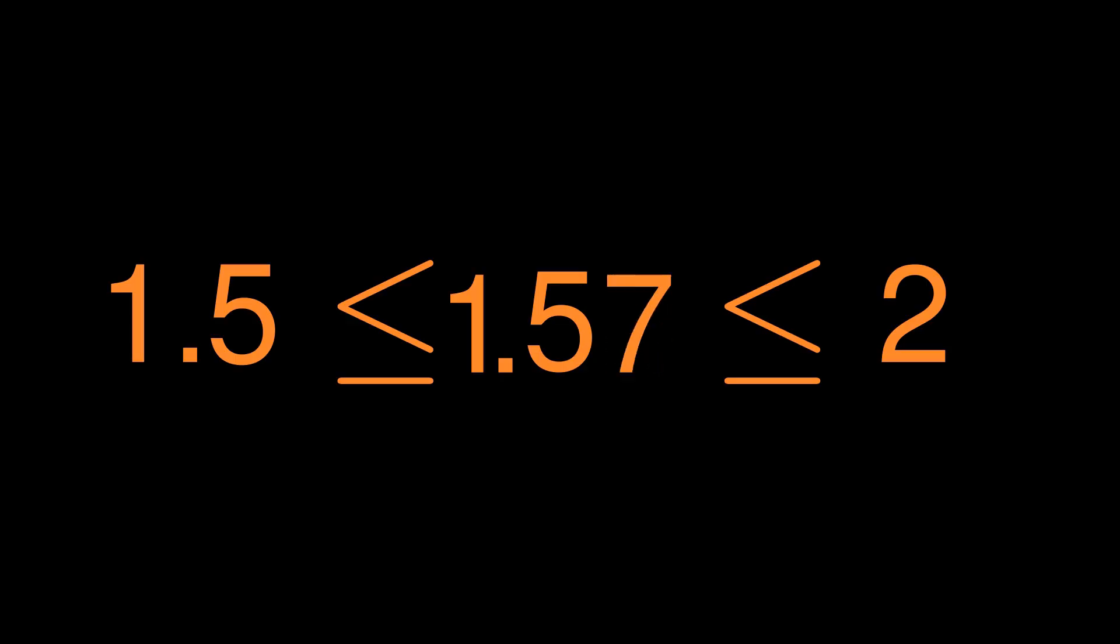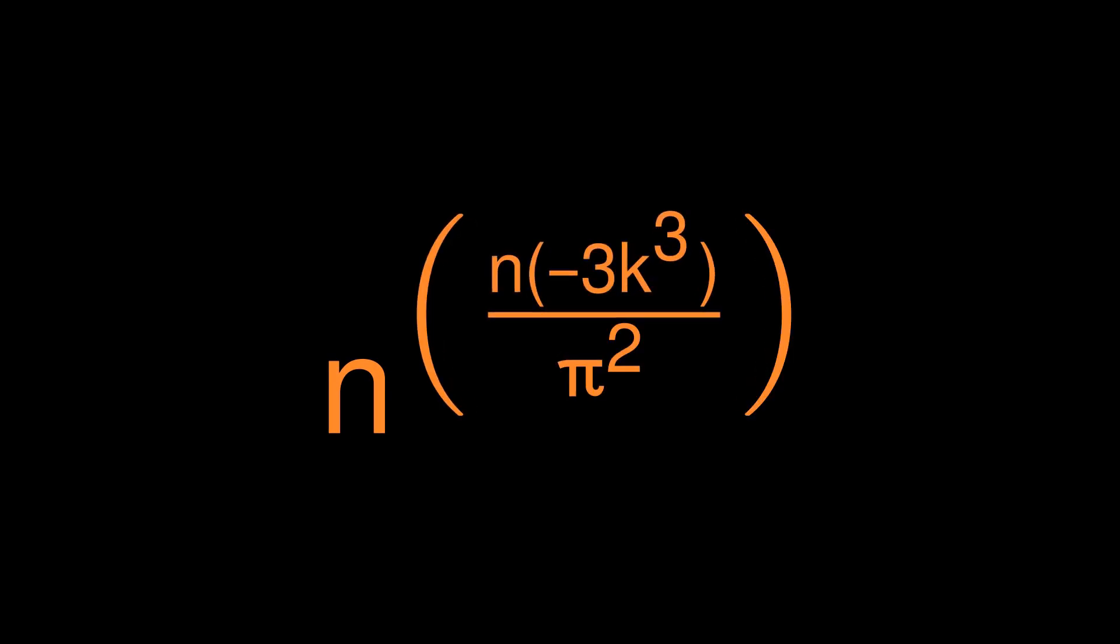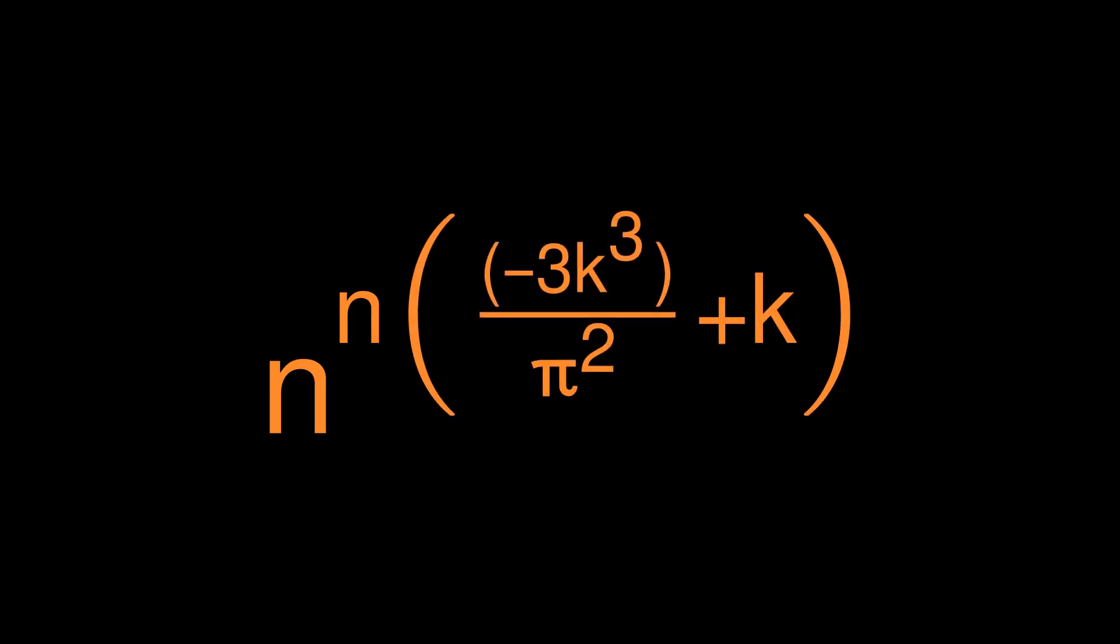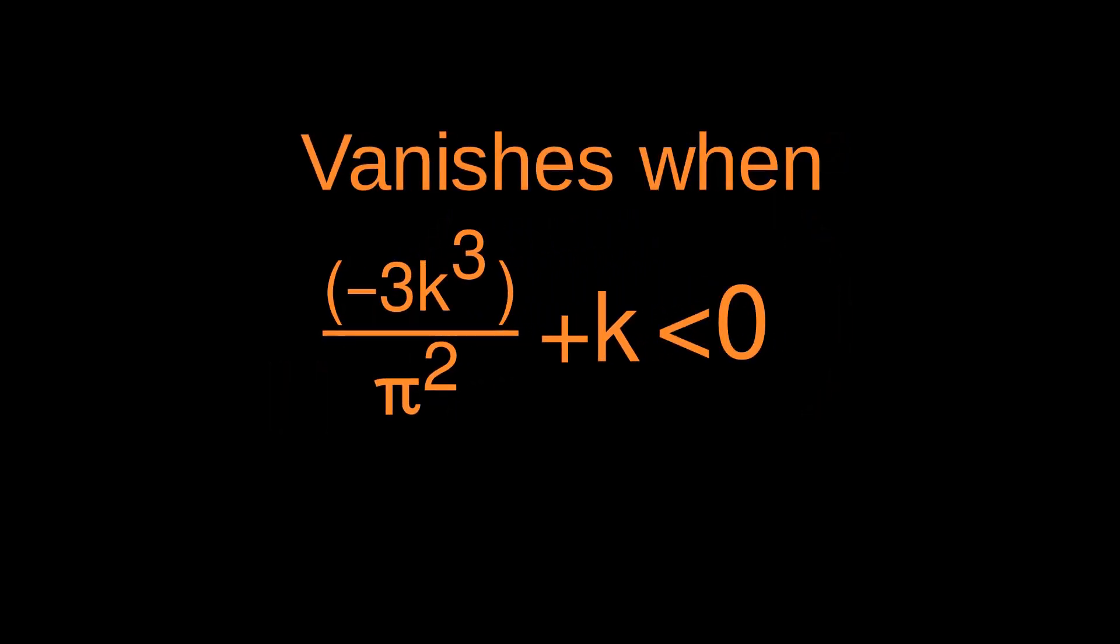Once we have this probability, we can calculate for any given constant k between 1.5 and 2, what the odds are that a randomly selected group of kn points in an n-by-n grid have no 3 in line. This turns out to be about n to the power of n times negative 3k cubed over pi squared. Then we multiply by the number of total configurations of kn points, n squared choose kn, to see about how many no 3 in line configurations exist with kn points. The equation for this is dominated by an n to the n term, or more specifically, n to the n times negative 3k cubed over pi squared plus k. This is actually where Ellmann's correction comes in. Guy and Kelly incorrectly had plus 2 instead of plus k. This term goes to 0 when the coefficient in the exponent is negative. In other words, if k is too big, then we expect there to be no sets of points with no 3 in line just by chance. That doesn't mean there can't be one, just that it's statistically unlikely.